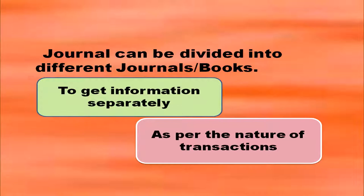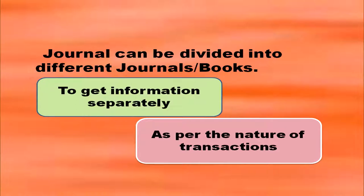Why are we dividing? In order to get information separately we are dividing journals. In the case of purchases book you will get all information relating to purchase in the same book. In the case of sales book you will get all information relating to sales in that particular book itself. So to get information separately, special books are prepared.